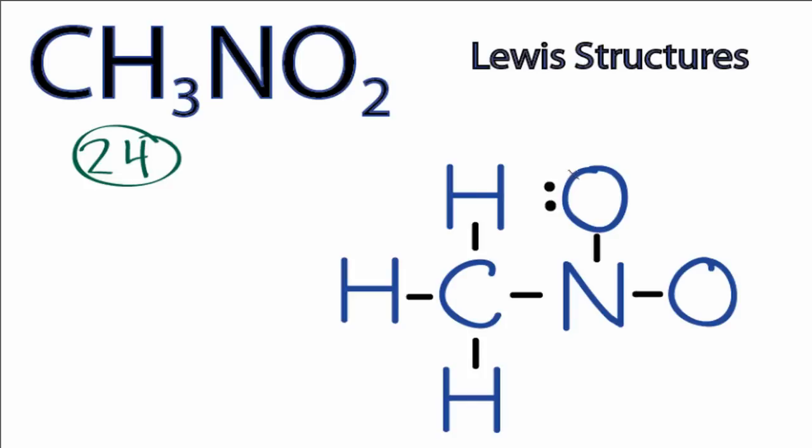So we have 12, 14, and 24 total valence electrons there. The problem is everything has an octet, and the hydrogens have two valence electrons, so their outer shell is full, except the nitrogen in the center. It only has six valence electrons.